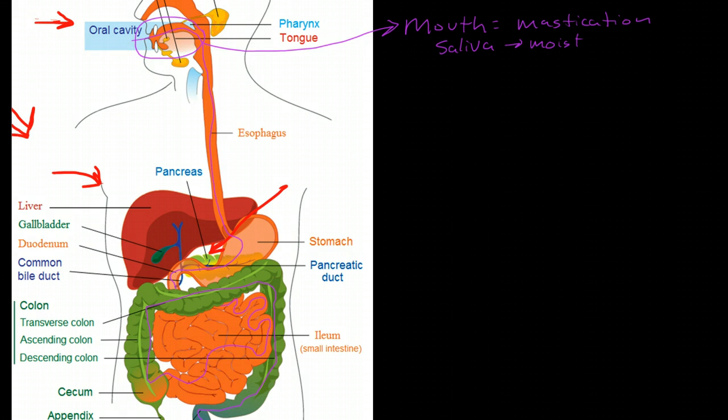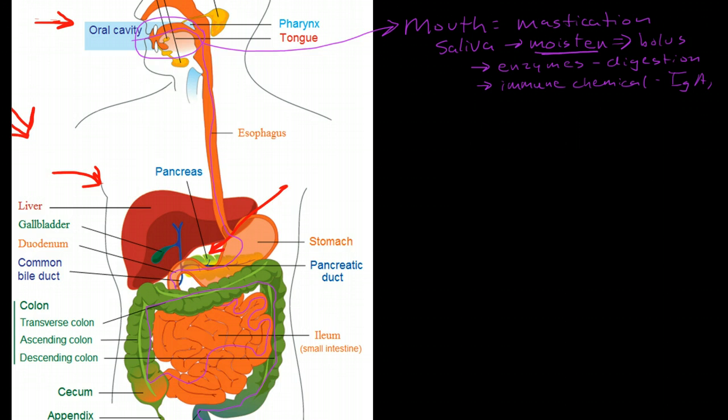And this is the moistened food. It's 99.5% water. So, moistening is an important function of saliva and also that helps to hold the food together in the bolus that can travel through the GI tract via peristalsis. And saliva also has enzymes that begin digestion, and it has immunologically active chemicals including immunoglobulin A and some lysozymes and peroxides that help to kill off some microorganisms and also protect the teeth.